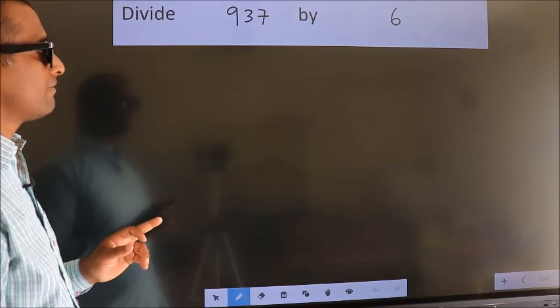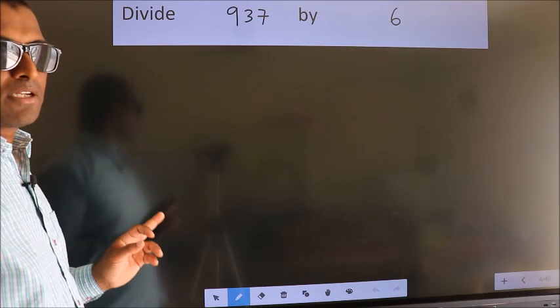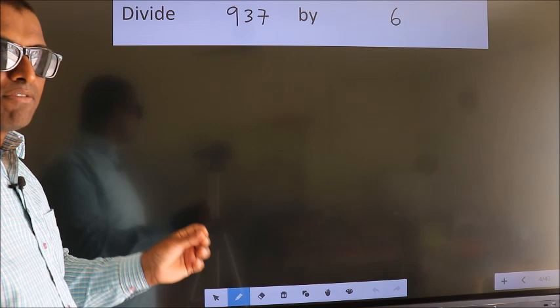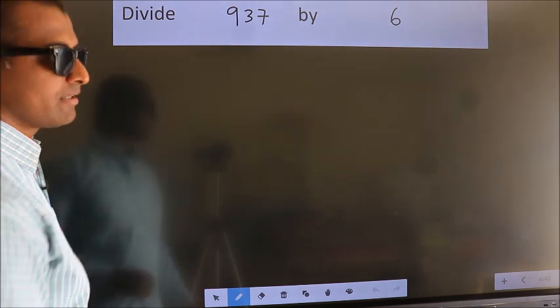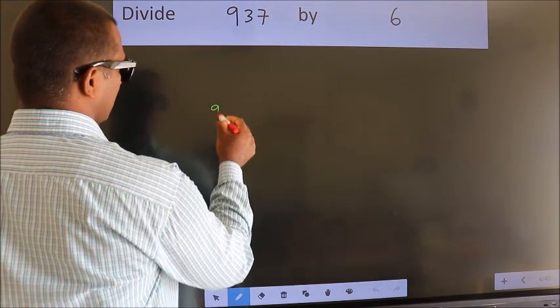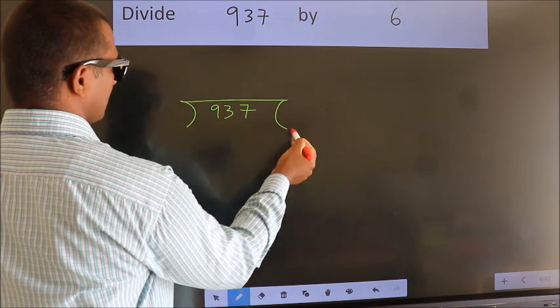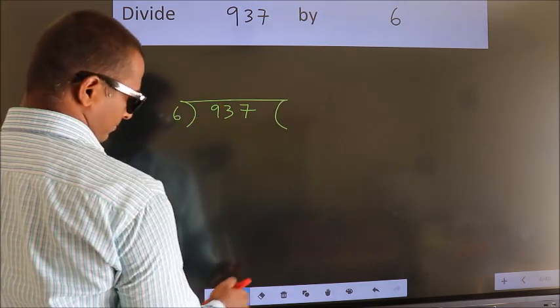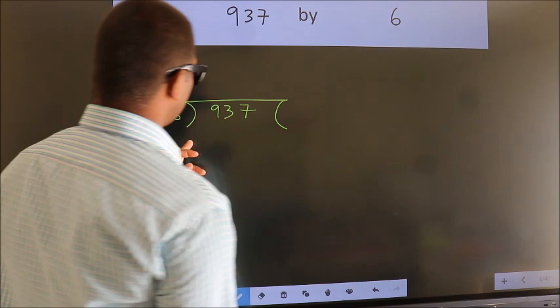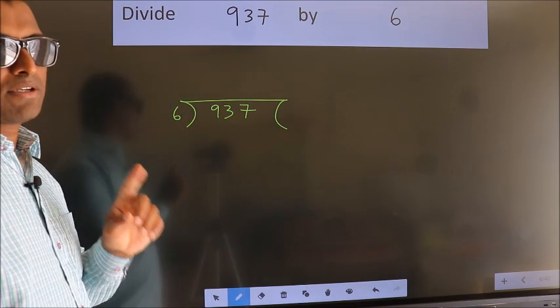Divide 937 by 6. To do this division, we should frame it in this way. 937 here, 6 here. This is your step 1.